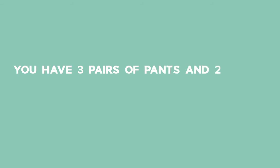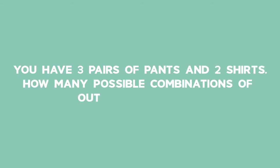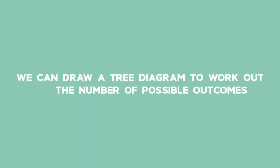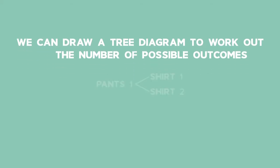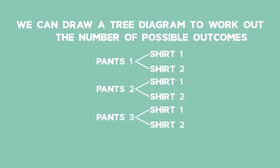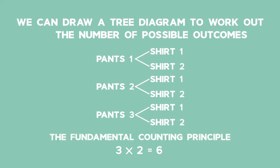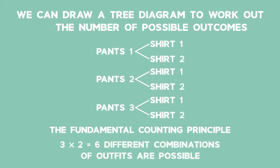Example: You have three pairs of pants and two shirts. How many possible combinations of outfits are there? We can draw a tree diagram to work out the number of possible outcomes. The tree diagram shows us that there are three times two, which is equal to six possible combinations of outfits. Using the Fundamental Counting Principle, we can quickly work out that there are three times two different outfits. Therefore, there are six combinations — exactly the same answer as using the tree diagram.